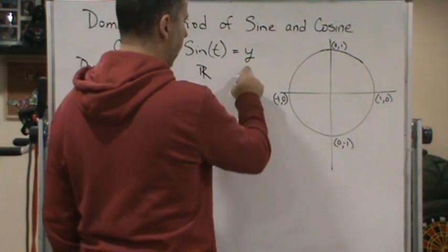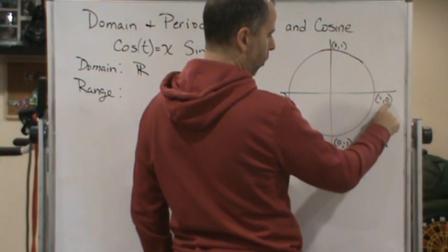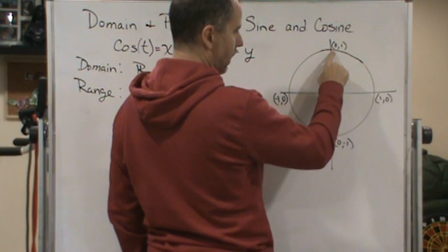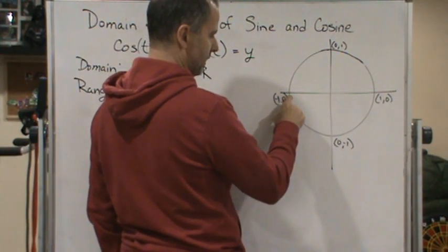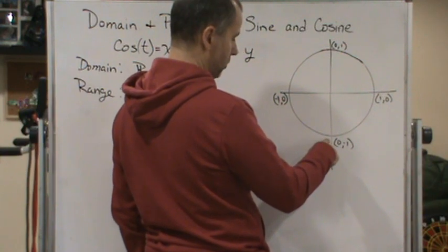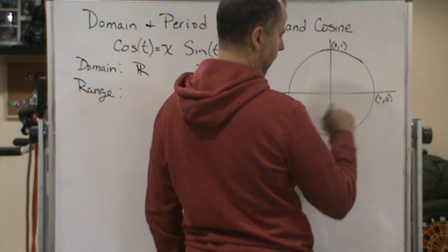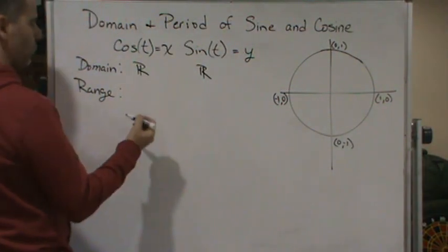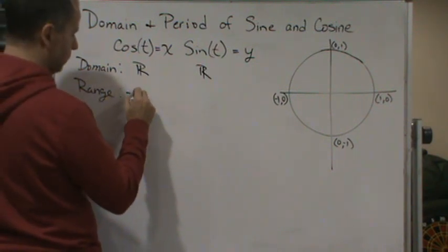And if you look at the y direction, the y coordinate, that starts at 0. And then as you go, it goes up to 1. And then as you go to π, it goes back to 0. And then it goes to negative 1 as you go to 3π over 2. And then you go to 2π, it goes back to 0. And so both of these have the same range, which is going to be between 1 and negative 1 inclusive.